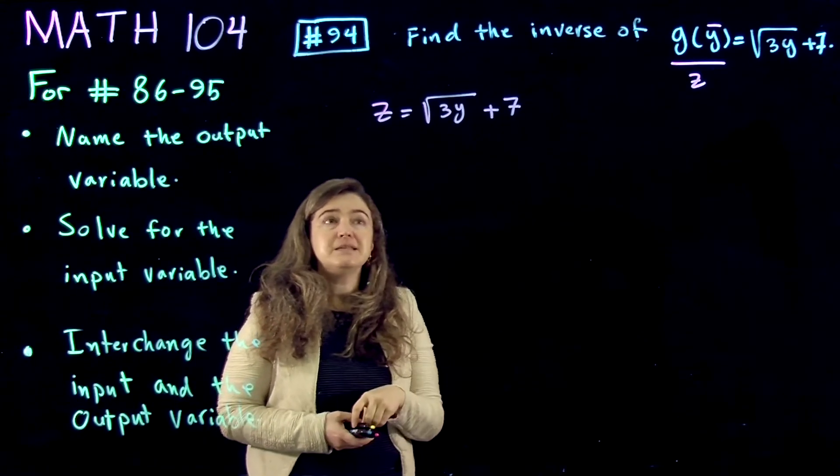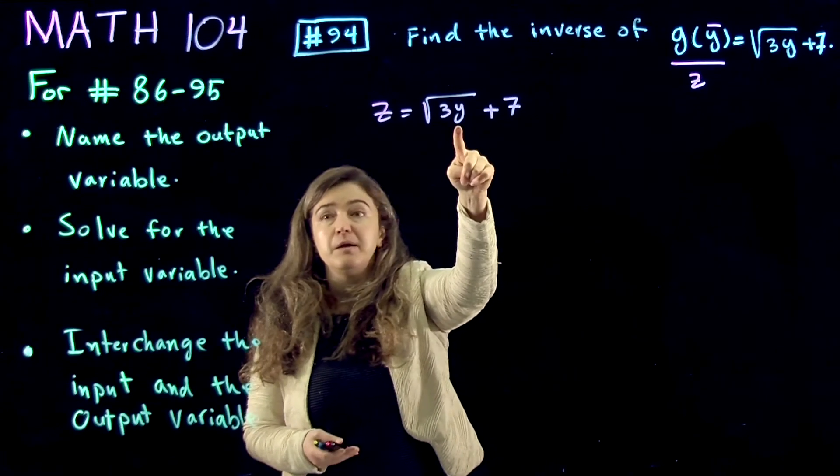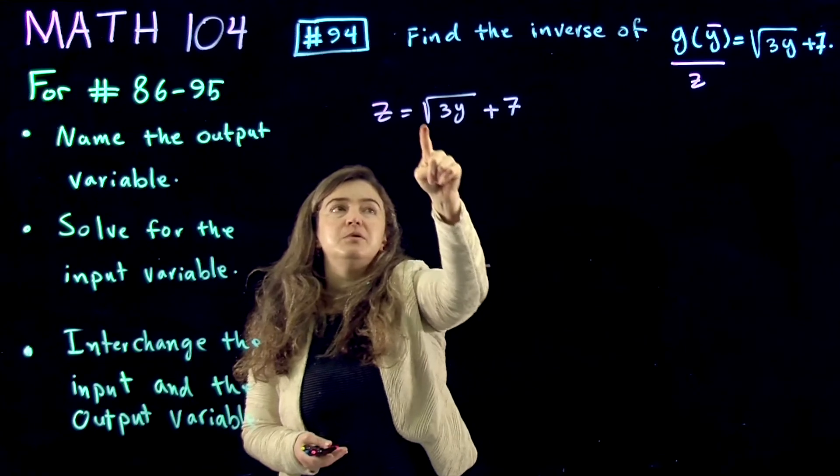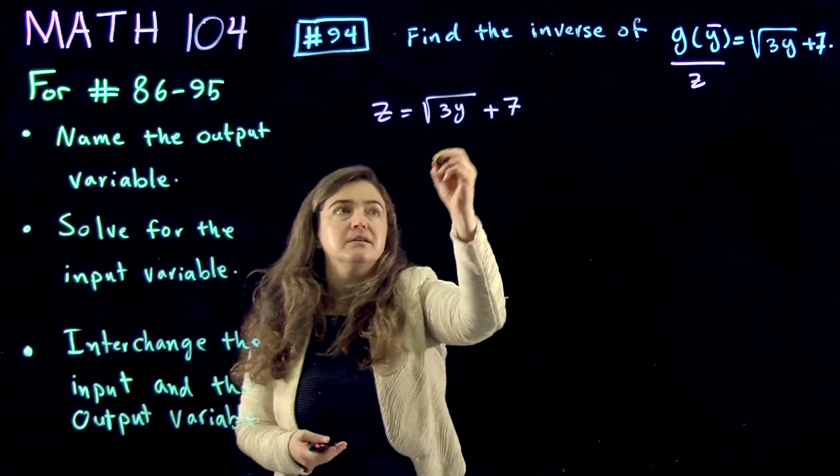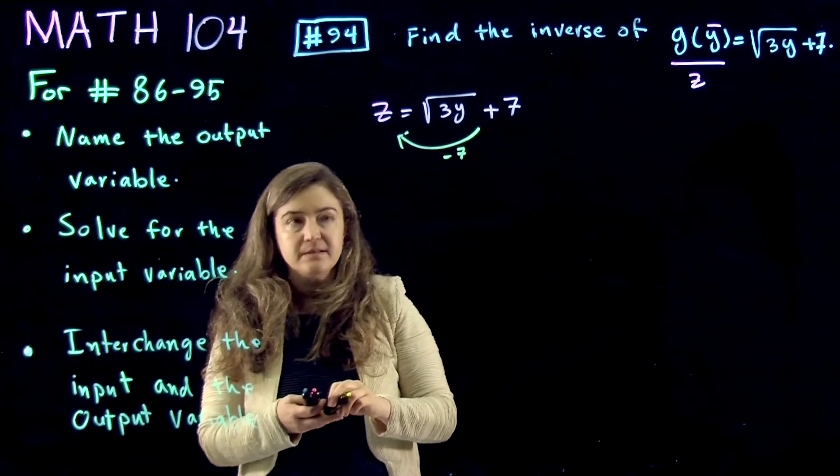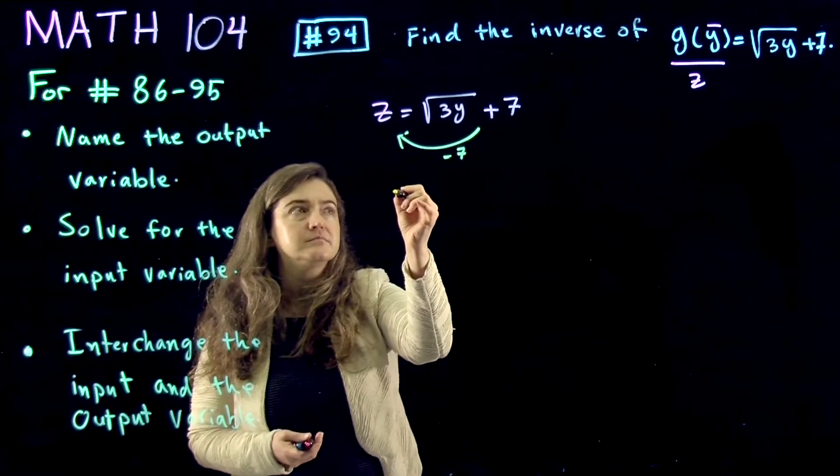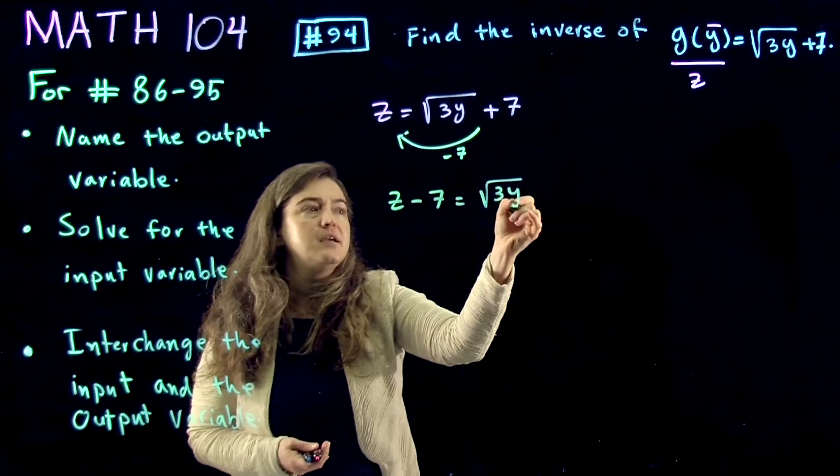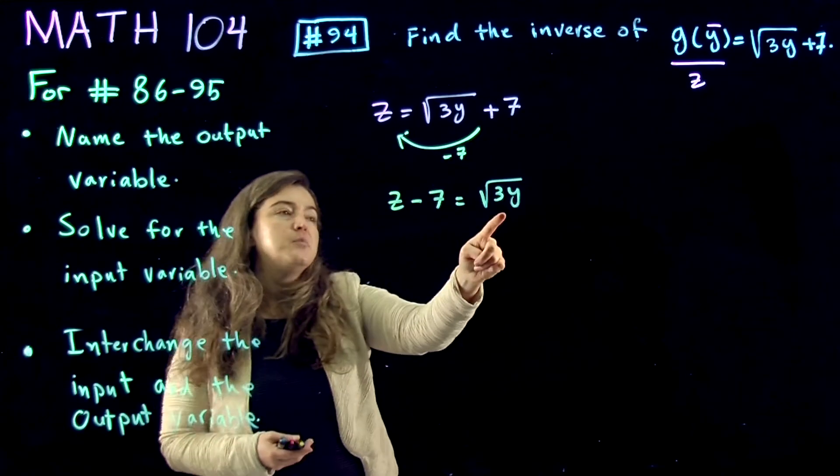The next thing is to isolate the input variable, and the input variable is appearing in this term. I want to isolate it, so I subtract 7 from both sides to get the input variable by itself and be able to solve for input variable.